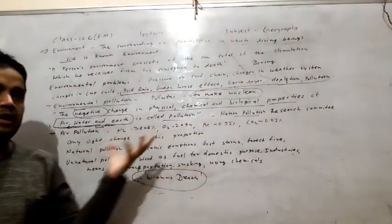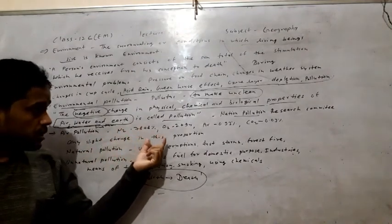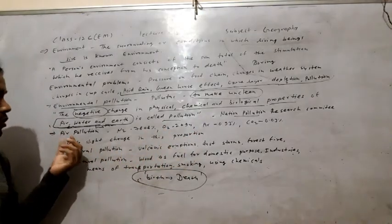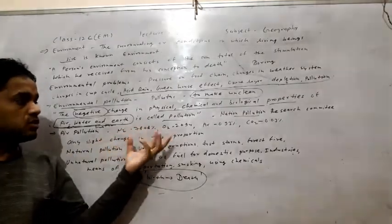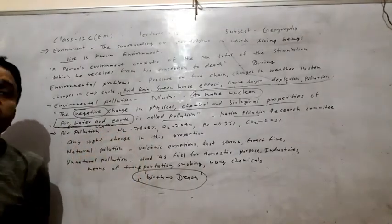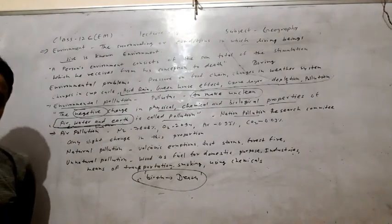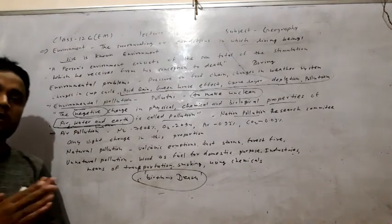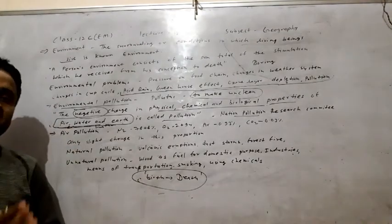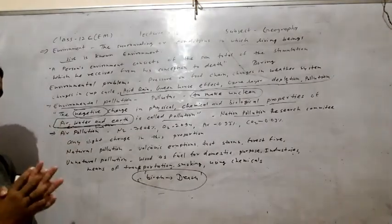Nitrogen, oxygen, argon, carbon dioxide — many types of gases — have equal proportions in the air. When carbon dioxide (CO2) increases in the air, or chlorofluorocarbons or chlorine increase in the environment, that is called environmental pollution. Also, sulfur dioxide is responsible for air pollution.